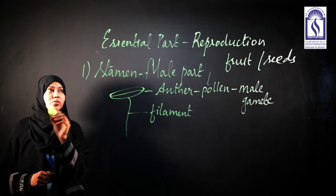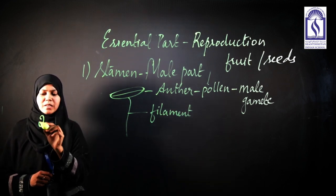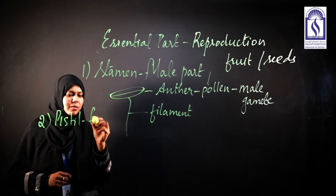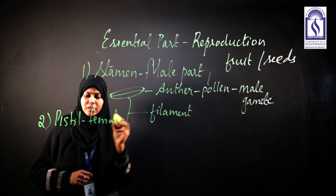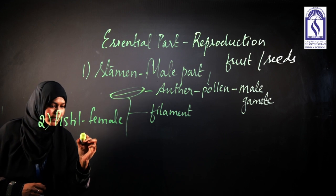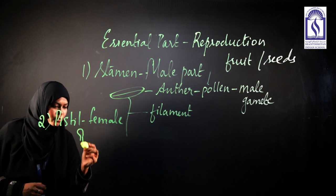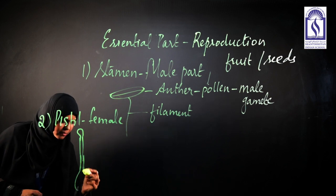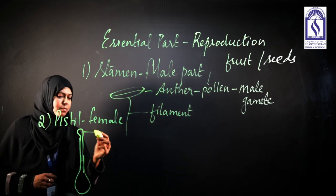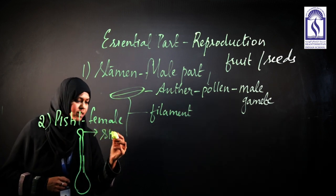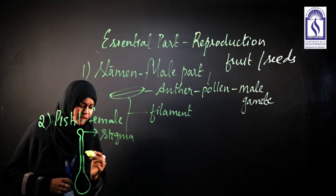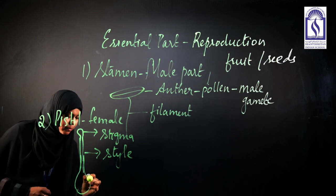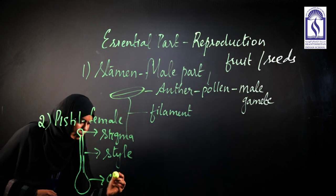Now, coming to the second essential part — the pistil, which is the female part of the flower. The pistil has three parts: a swollen tip, a tubular structure, and the base. The tip of the pistil is known as the stigma, the tubular structure is the style, and the base is the ovary.